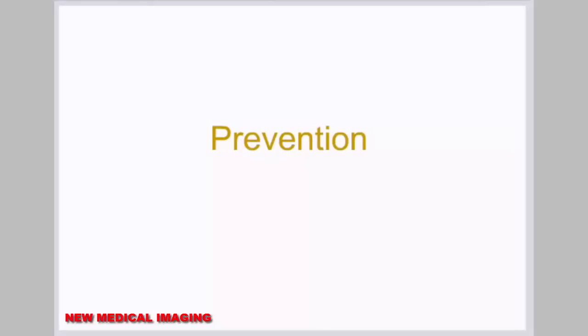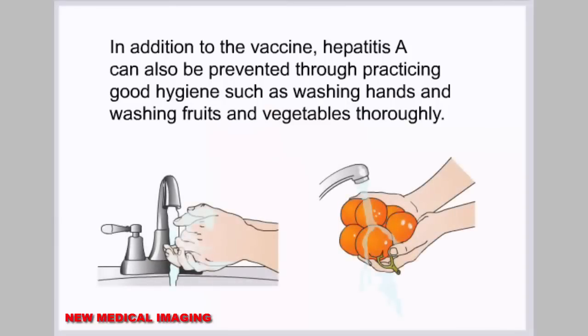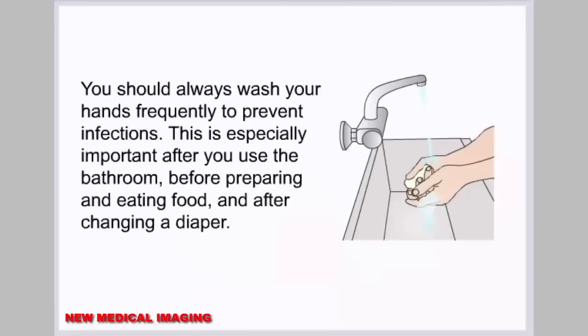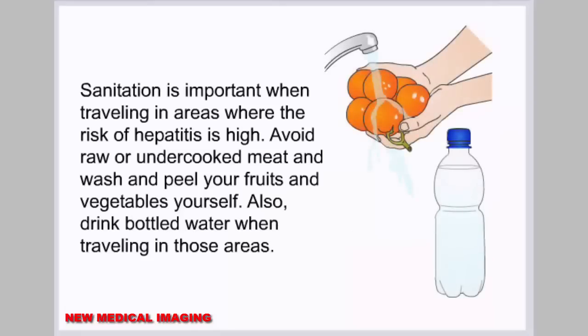In addition to the vaccine, hepatitis A can be prevented through practicing good hygiene, such as washing hands and thoroughly washing fruits and vegetables. Always wash your hands frequently — especially after using the bathroom, before preparing and eating food, and after changing a diaper. When traveling in high-risk areas, avoid raw or undercooked meat, wash and peel your own fruits and vegetables, and drink bottled water.